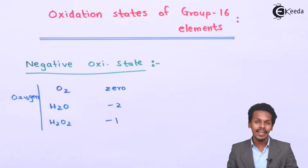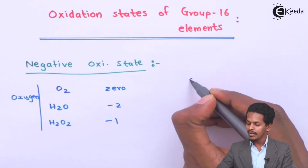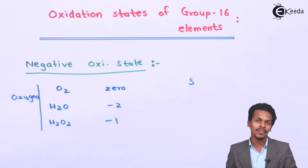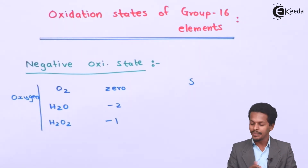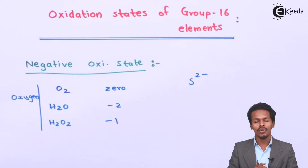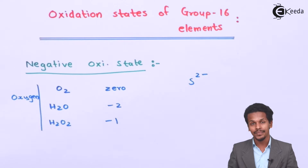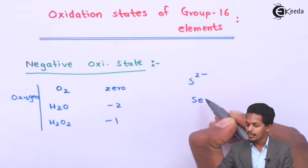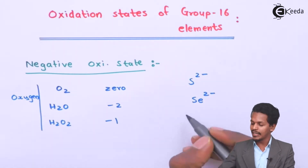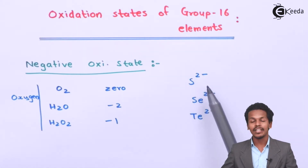Now let me talk about the other elements. Sulfur has a common oxidation state of minus 2 because sulfur is also electronegative, though less than oxygen. Sulfur can exhibit S²⁻, and considering H₂S gas, the sulfur has an oxidation state of minus 2. Selenium also exists in the form of Se²⁻ anions, and tellurium exists in the form of Te²⁻. In conclusion, all these elements have at least a minus 2 oxidation state.